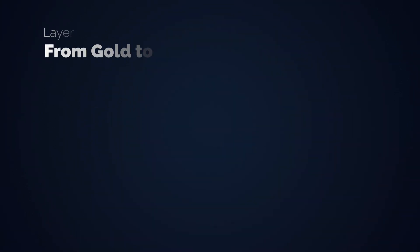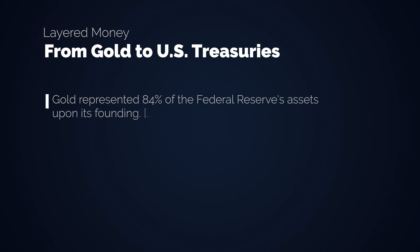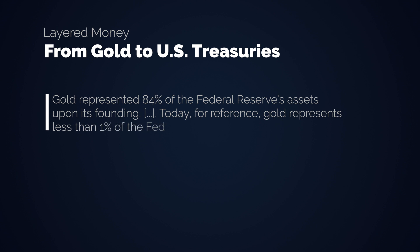Keeping that in mind, it's quite astounding what happened to the Federal Reserve, the US Central Bank. Gold represented 84% of the Federal Reserve's assets upon its founding. Today for reference, gold represents less than 1% of the Fed's assets. Gold was replaced by US Treasuries as the first layer. Remember: gold is money, everything else is credit.